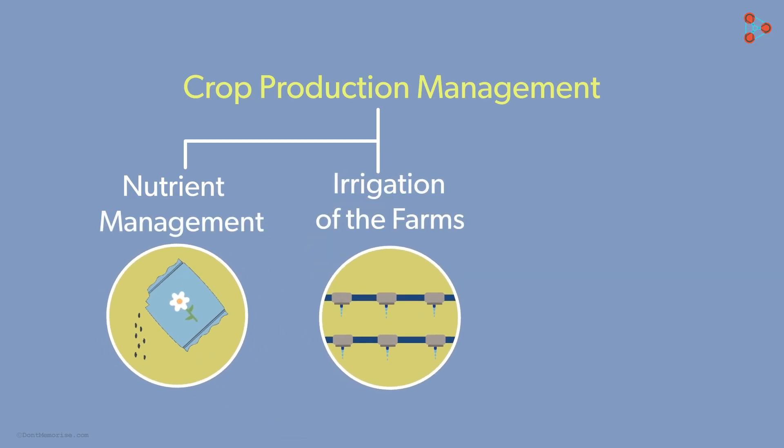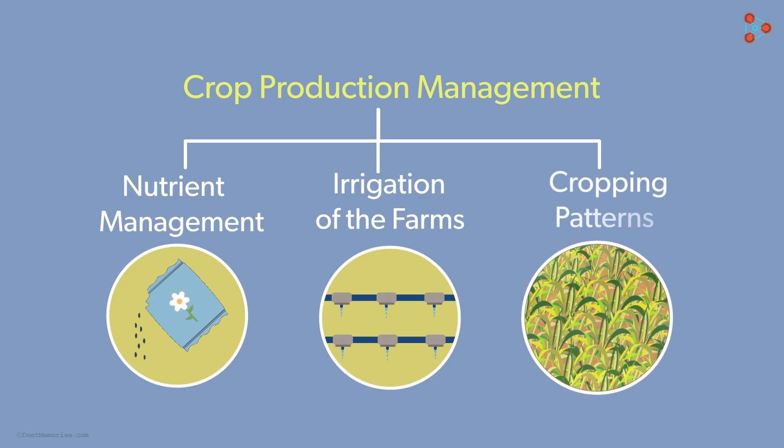While talking about crop production management, firstly let us look at nutrient management. Secondly we must look at irrigation of the farms. Yes, water is a very important requirement for a farmer. And thirdly we must look at the cropping patterns.